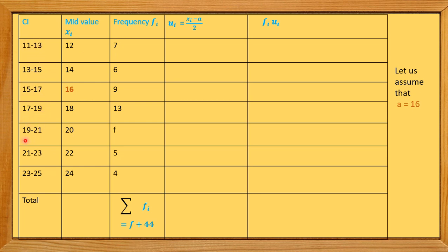The frequencies are given; one is unknown, f. So the sum of frequencies, Σfi = f + 44. In the Step Deviation Method, ui = di / h = (xi − a) / 2, where a is the assumed mean chosen from among the class marks.